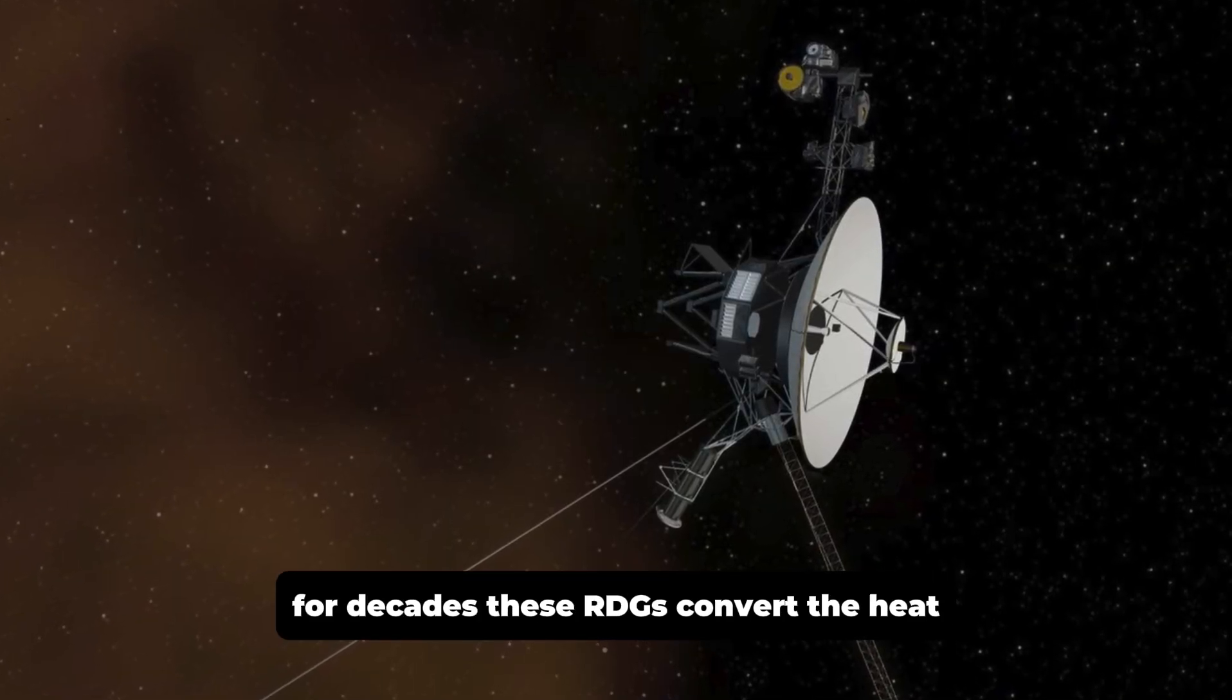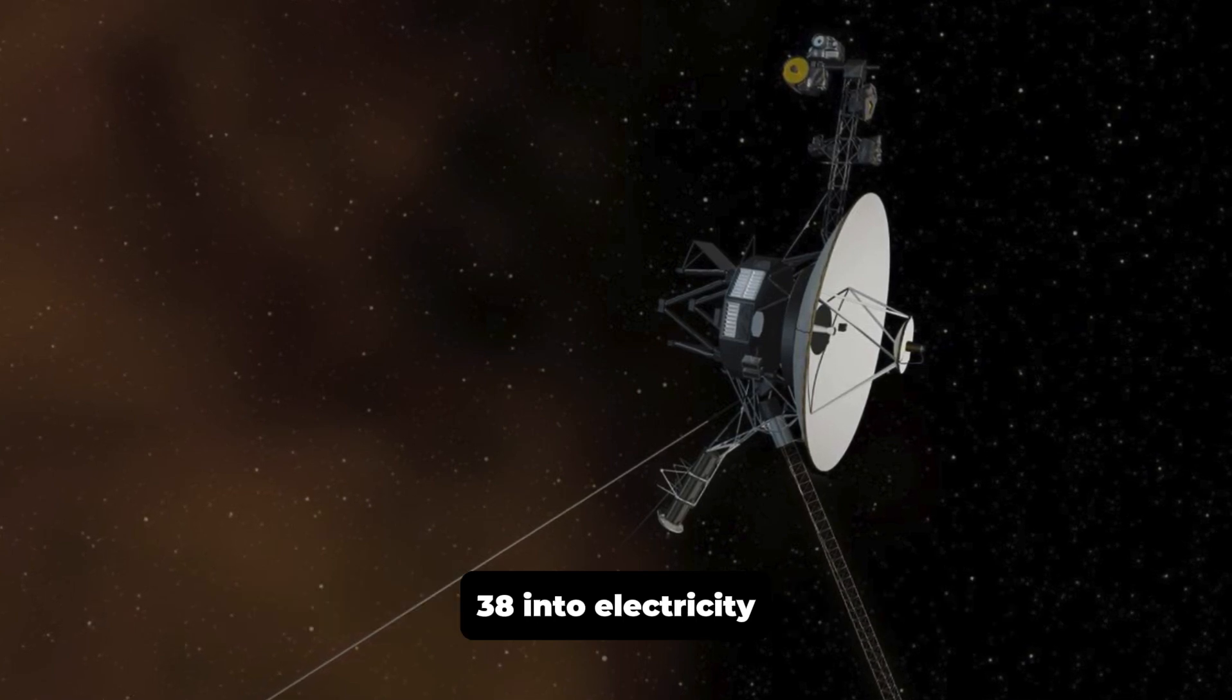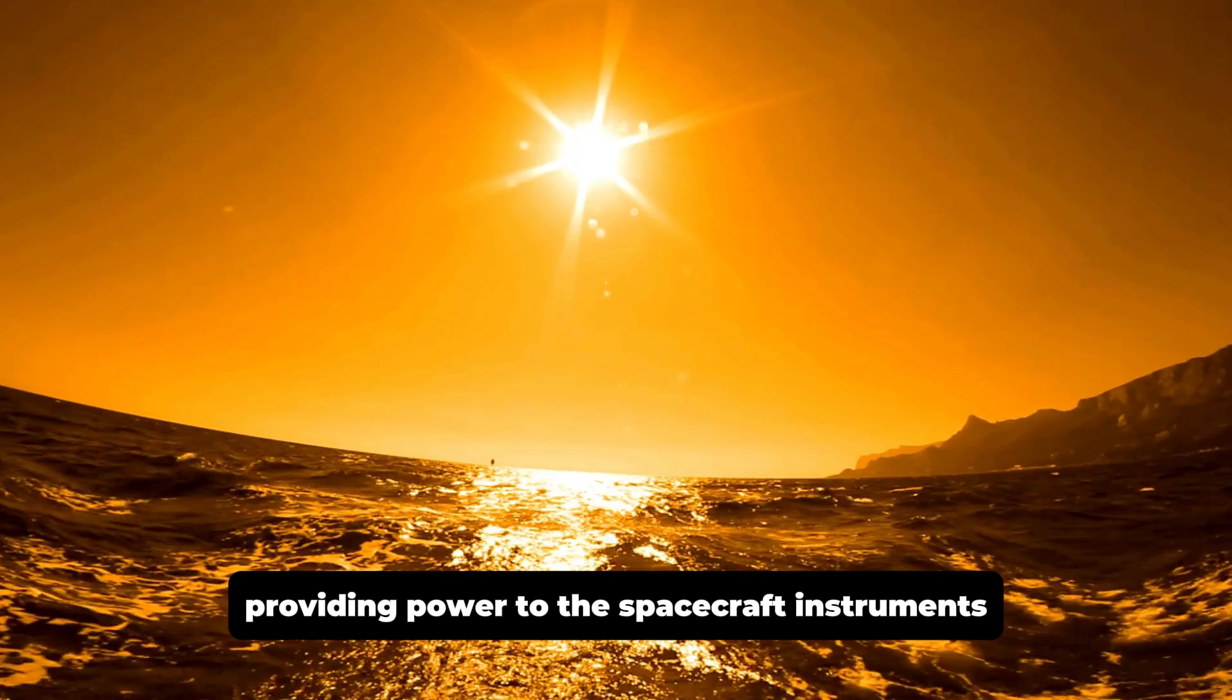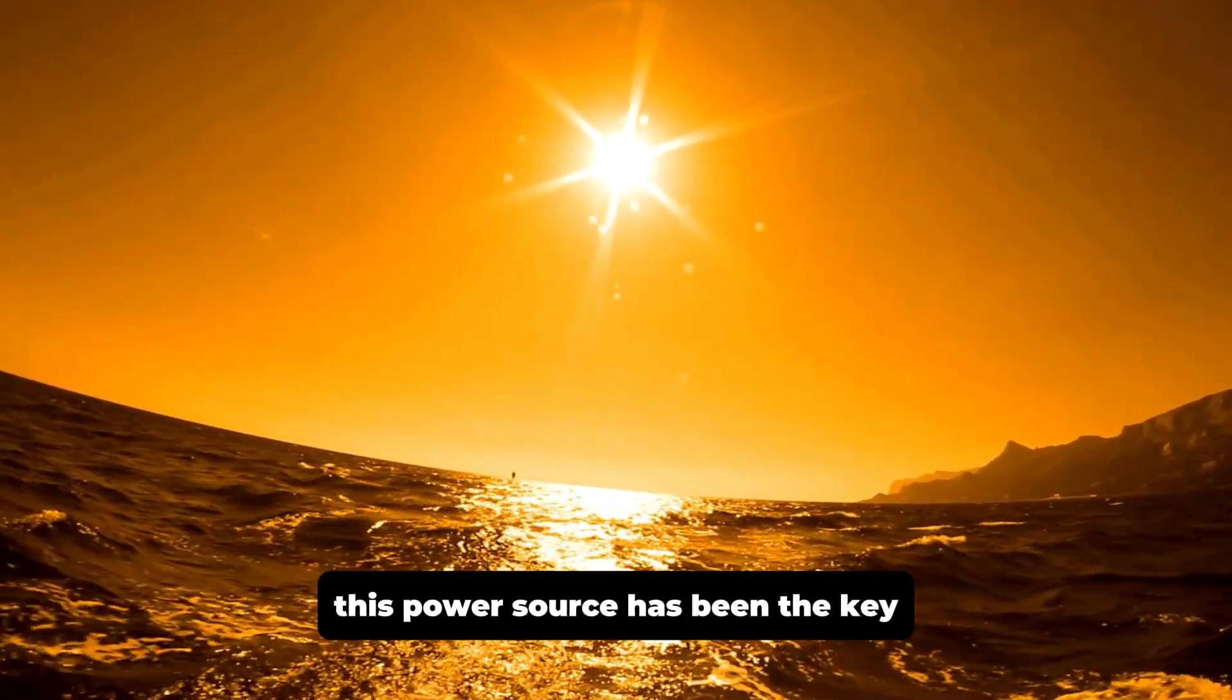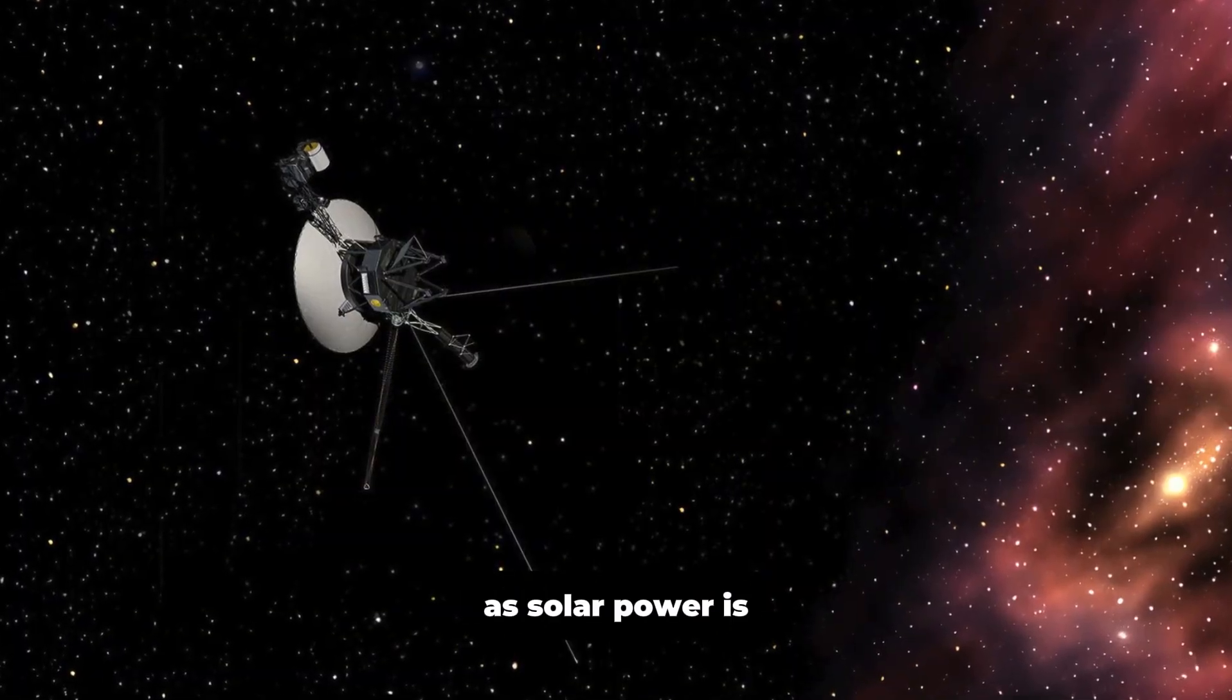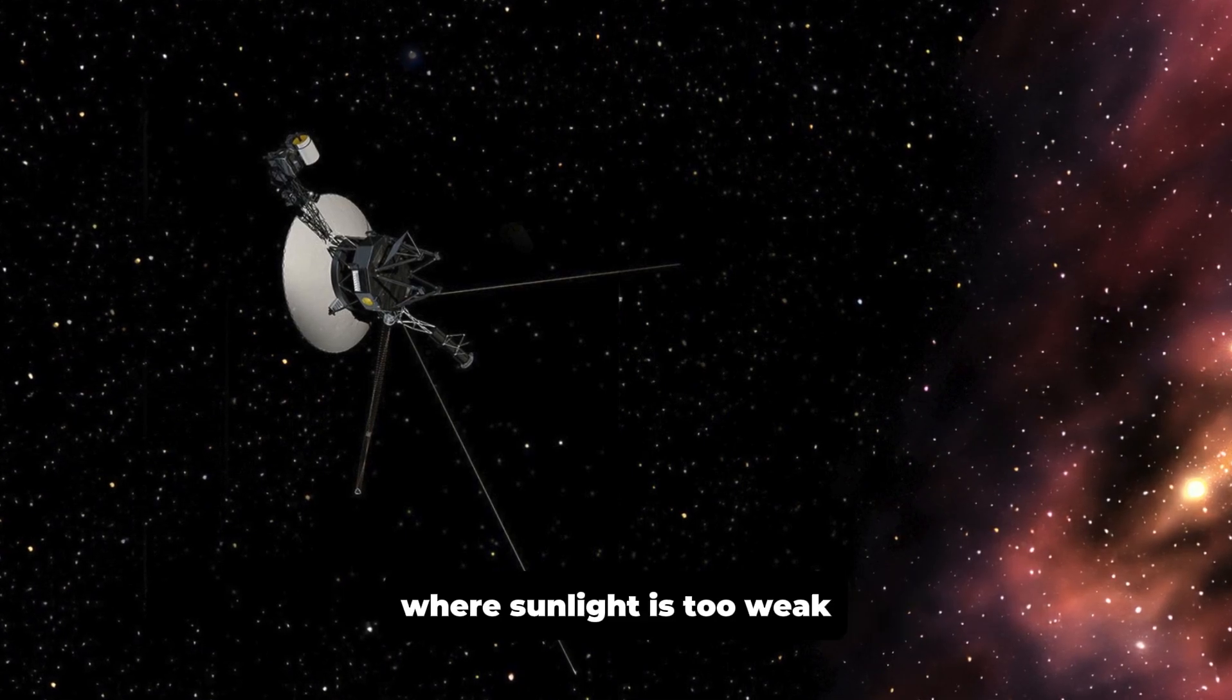These RTGs convert the heat produced by the radioactive decay of plutonium-238 into electricity, providing power to the spacecraft's instruments. This power source has been the key to their extraordinary longevity, as solar power is not viable in the outer reaches of the solar system where sunlight is too weak.